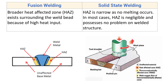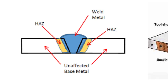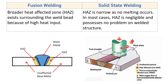Next point: in fusion welding, a broader heat affected zone (HAZ) exists surrounding the weld bead because of the high heat input. As heat is applied externally and melting occurs, the metal solidifies to form the weld joint. Due to heating above the melting point, the properties of the base component change in the region surrounding the weld, which is known as the heat affected zone.